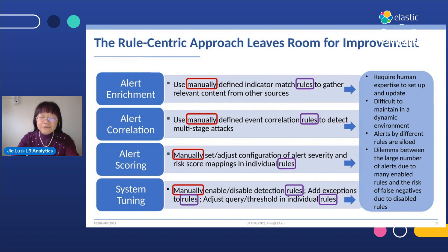This rule-centric approach often involves quite some manual work. Even with support from Elastic and the community for rich detection rules, it still requires human expertise to set up and update the rules to make them run effectively in a specific environment. The task of maintaining all the rules to ensure their efficacy over time can be daunting as well.